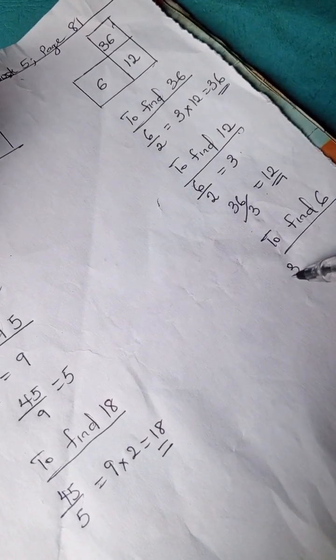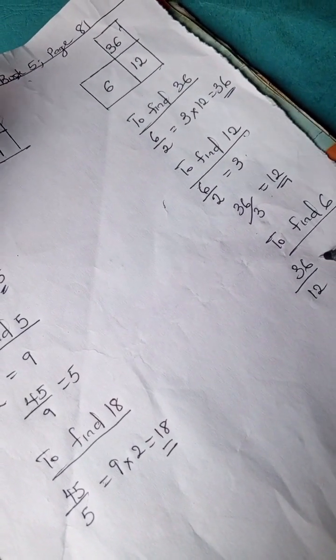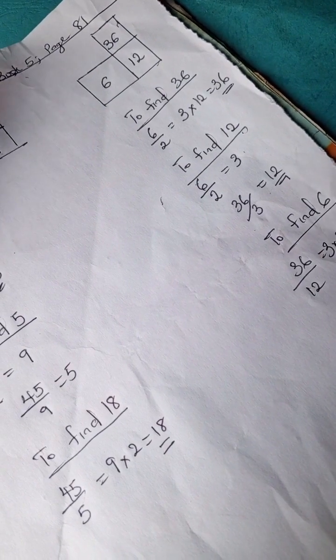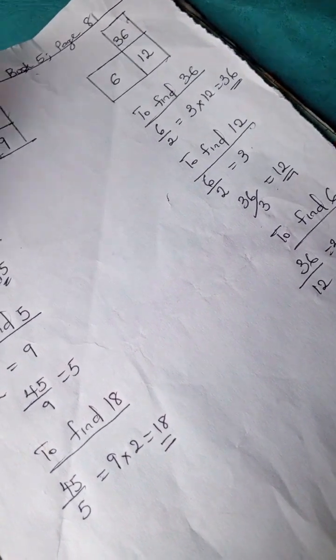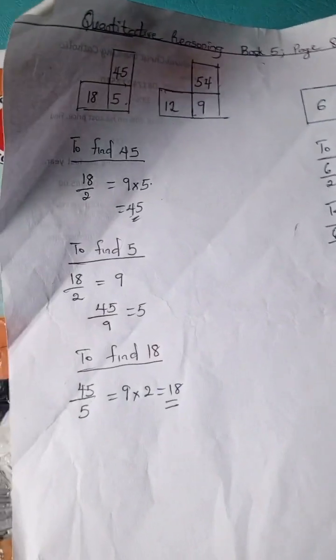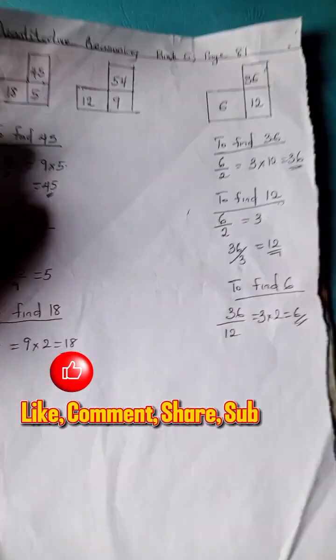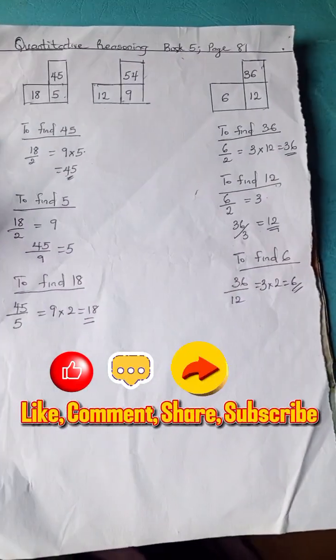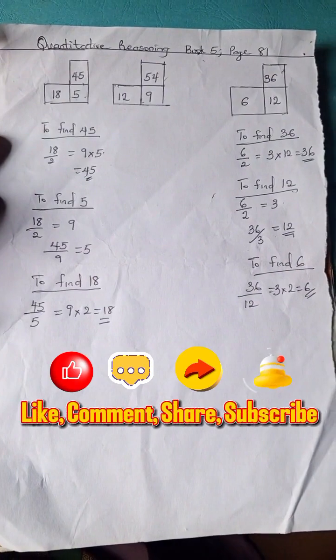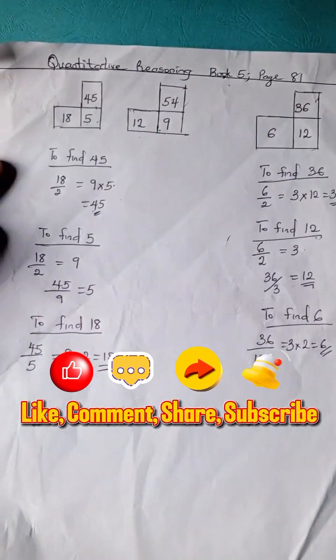we're going to have 36 divided by 12 is 3, 3 times 2 is 6. Right, so don't forget to subscribe to this channel for more quantitative reasoning and mathematics problems and solutions. Bye!